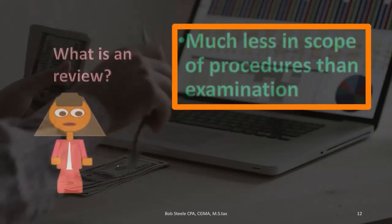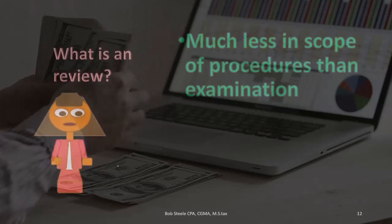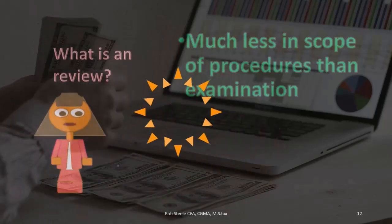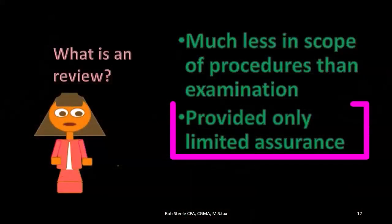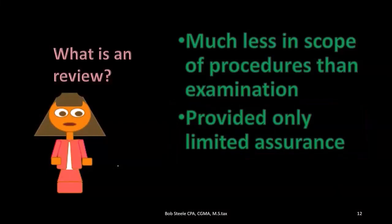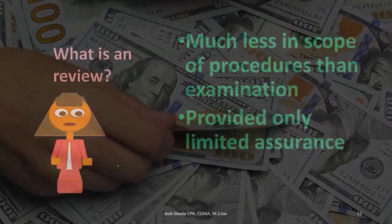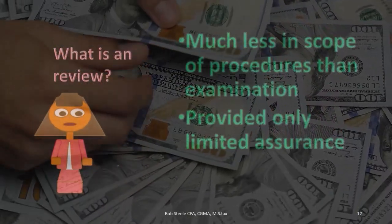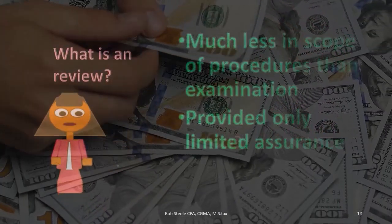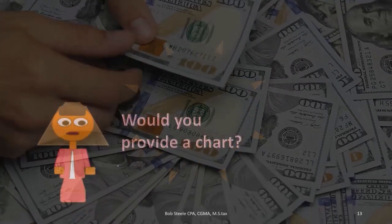An audit is the highest level engagement. A review involves less digging — it probably involves more in-house testing like ratio analysis done in the office rather than going out to the company's site. A review provides only limited assurance. Sometimes that's all a bank requires for a loan. A full audit costs more money, so if the bank only wants limited assurance, a review may be appropriate. Publicly traded companies are required to have audits; non-publicly traded companies often have situations where a review is sufficient.